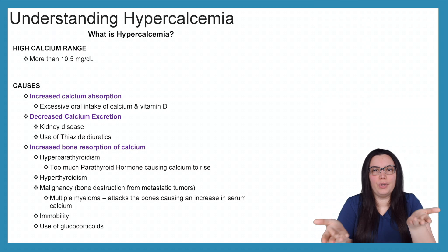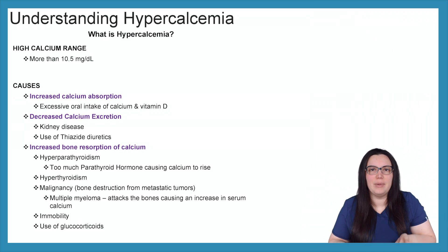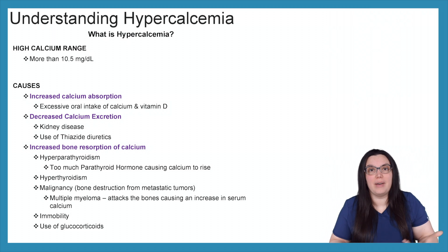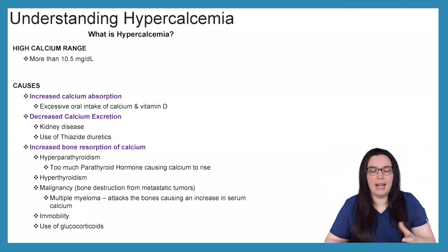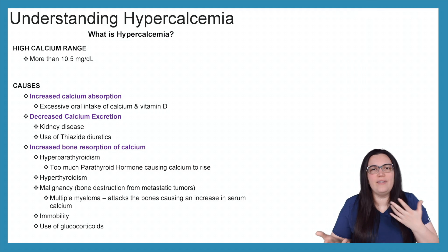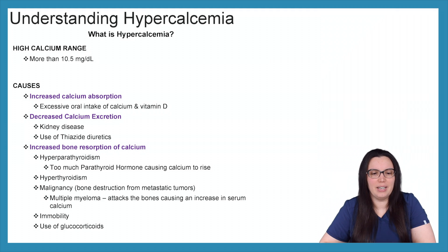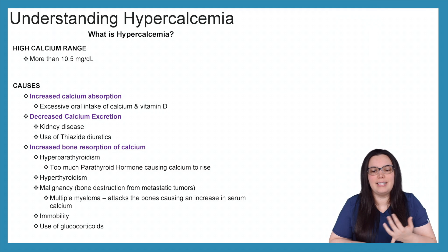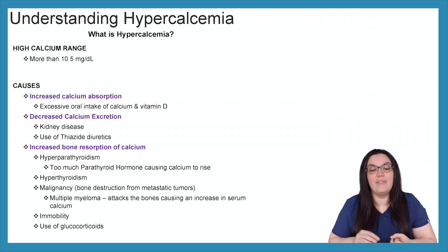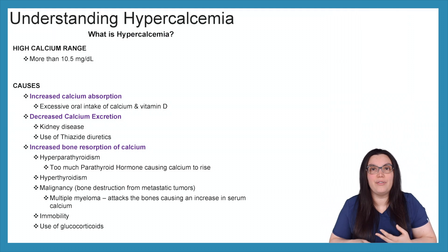So what is hypercalcemia? Hyper means high, calcemia means calcium in the blood, so we have an excessive amount of calcium found within our blood — high calcium levels, more than 10.5 milligrams per deciliter. There are quite a few causes, starting with an increase in calcium absorption: excessive oral intake of calcium and vitamin D. We can also have a decrease in calcium excretion either by our kidneys due to kidney disease, or the use of thiazide diuretics, which are calcium-wasting.